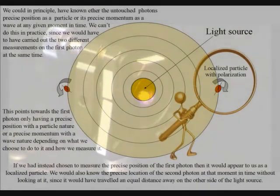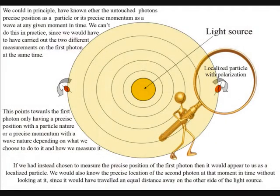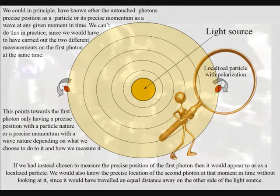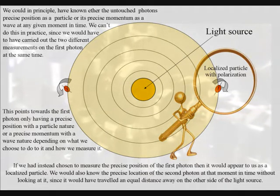But if we had instead chosen to measure the precise position of the first photon, then it would appear to us as a localized particle. We would also know the precise location of the second photon at the same moment in time without looking at it, since it would have traveled an equal distance away on the other side of the light source.